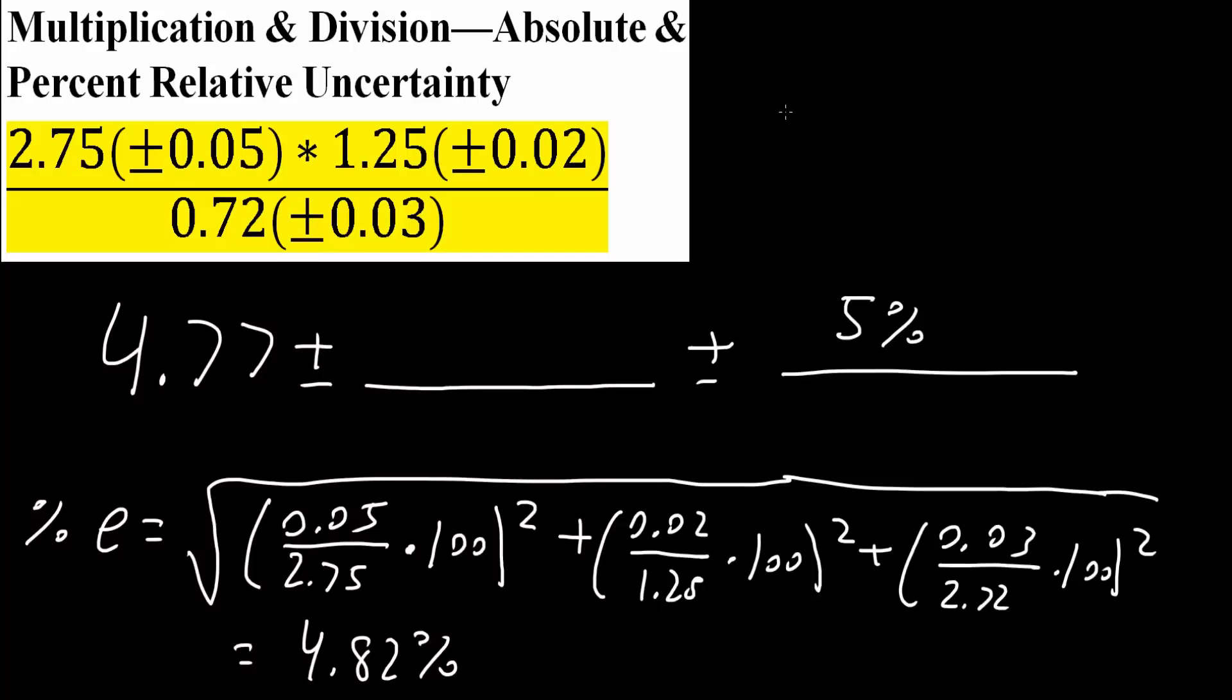So what we would get here is we take the 4.77, multiply it by 4.82, and then divide that by 100. This would give us 0.2299, so we write down plus or minus 0.23.